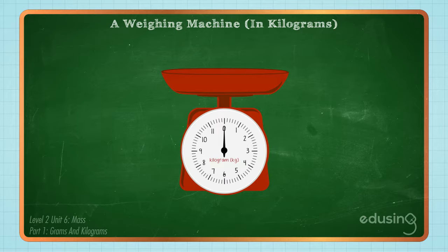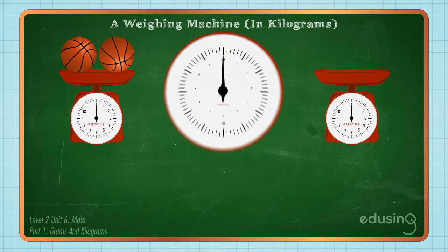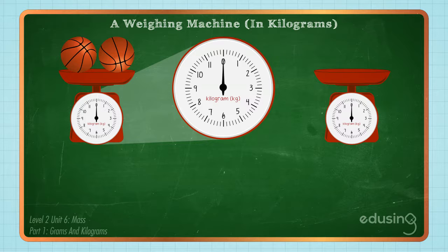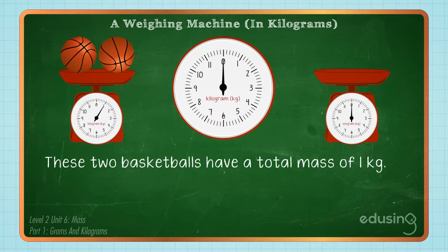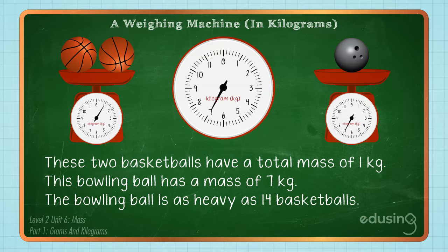Let us now measure and compare masses in kilograms. These two identical basketballs have a total mass of 1 kilogram. This bowling ball has a mass of 7 kilograms. It is as heavy as 14 basketballs.